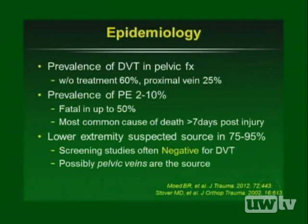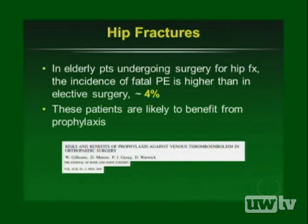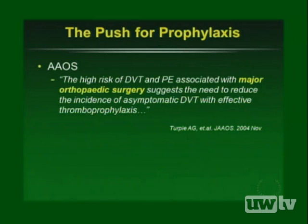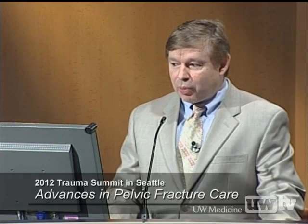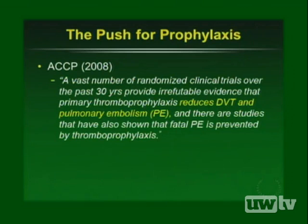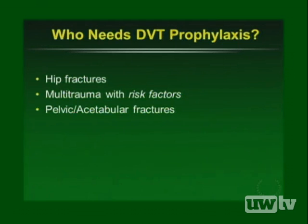In elderly hip fracture patients, a 2000 British Journal study estimated a fatal PE rate of 4%. The AAOS recognized in 2004 the high rate of DVT and PE with major orthopedic surgery — which certainly includes pelvic and acetabular surgery — noting that effective prophylaxis decreases the incidence of asymptomatic DVT. In 2008, the chest physicians also called for prophylaxis to reduce DVT and pulmonary embolism rates.